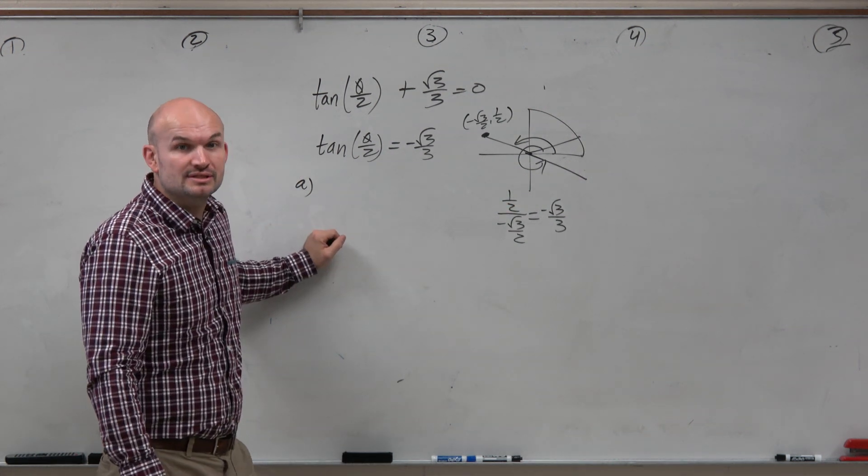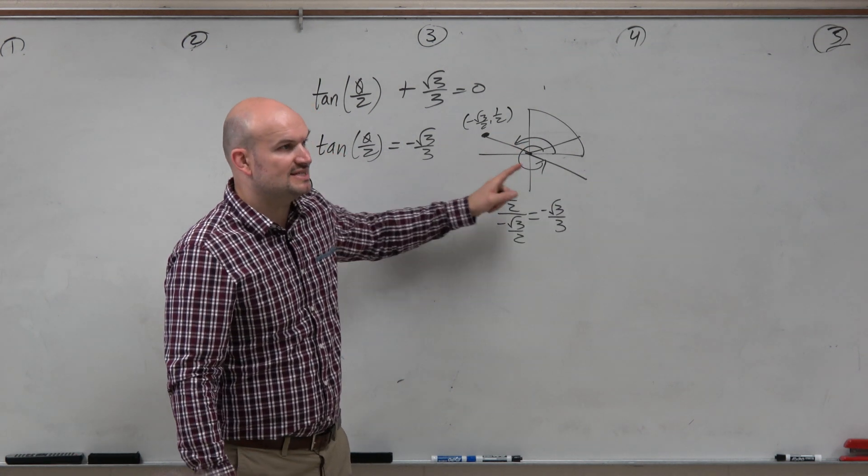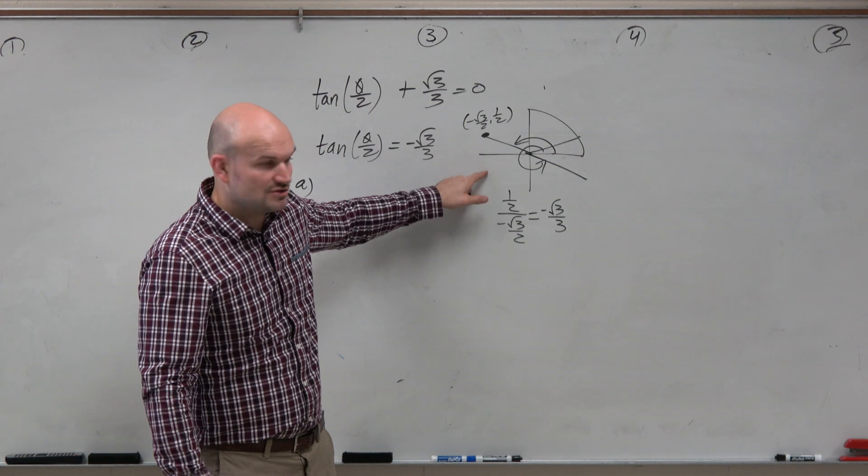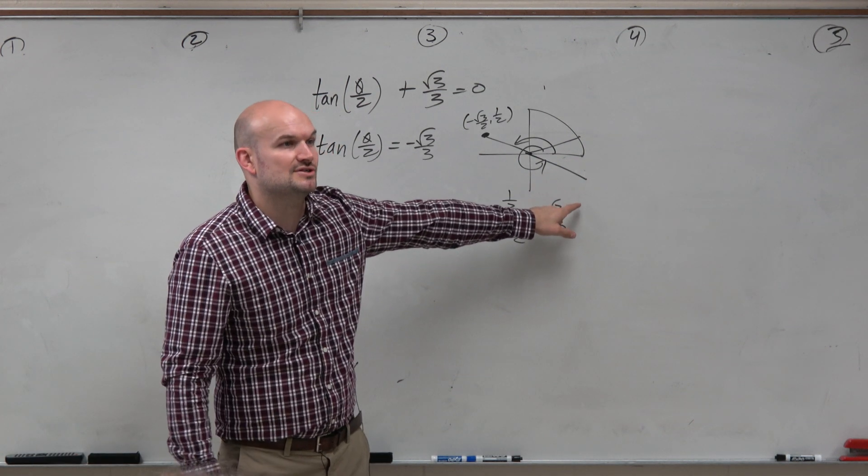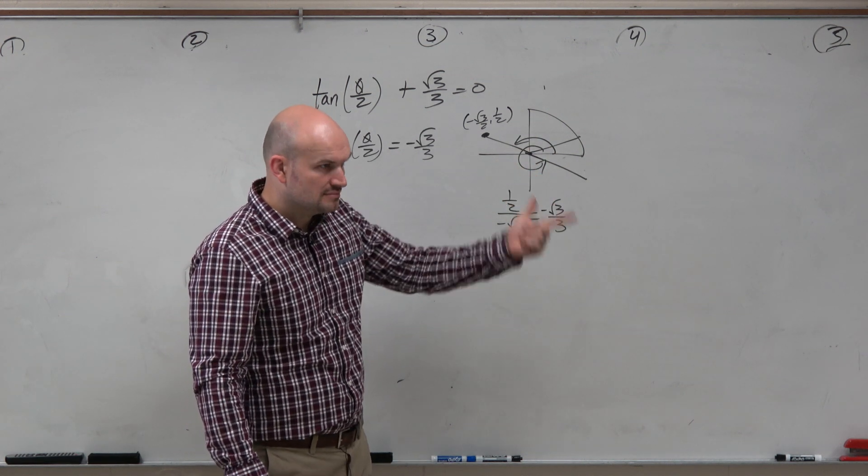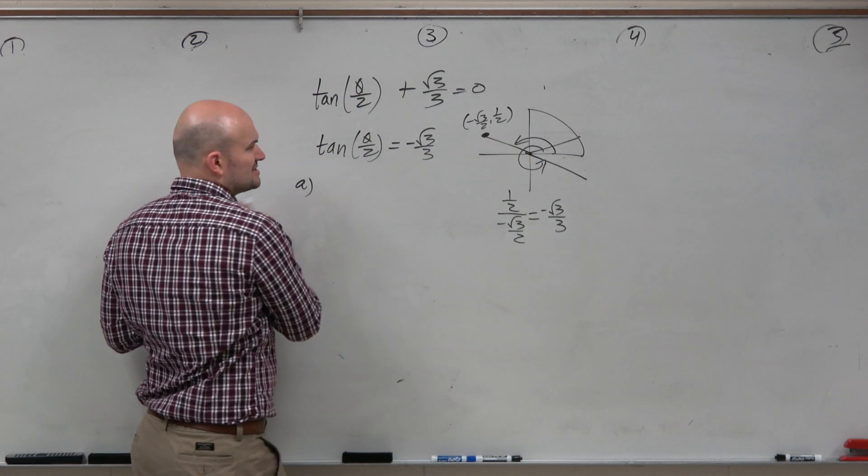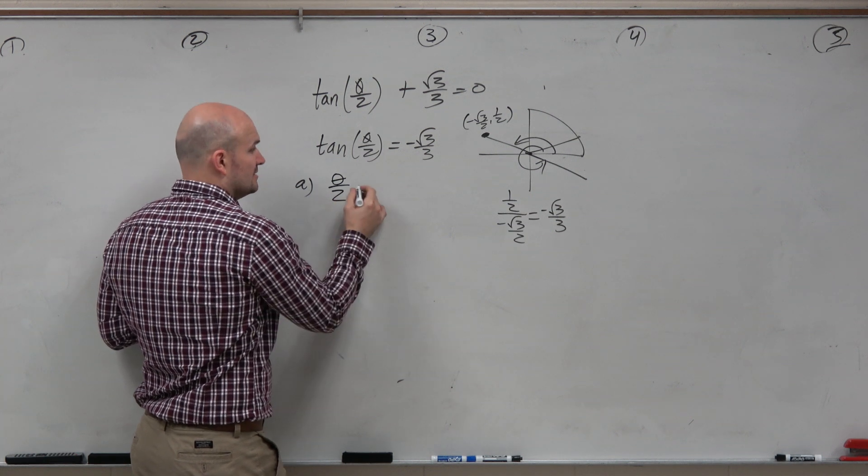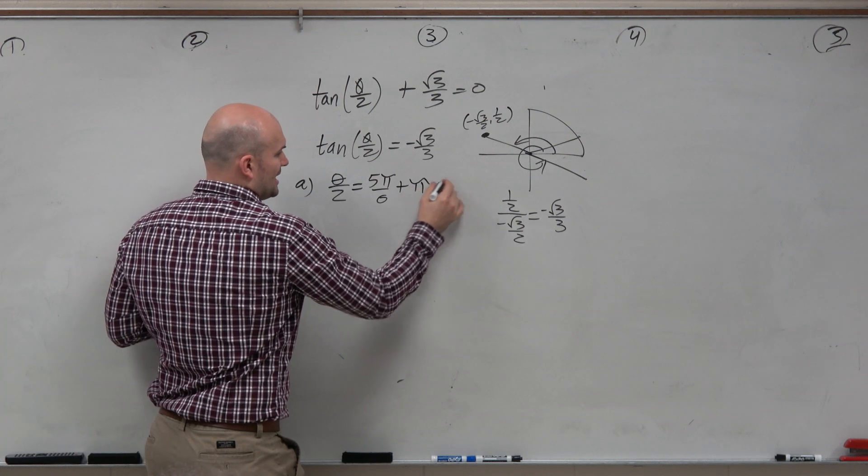However, if we're writing all the solutions, are these related to each other? Are these equidistant from each other? Yes. Don't you guys see how we can just add pi to give us the solution? We don't need to find both these answers and then add 2 pi to them. Right? We could just find one answer and then just add pi to it. So therefore, this answer is 5 pi over 6. So we could say theta halves is equal to 5 pi over 6 plus pi n.